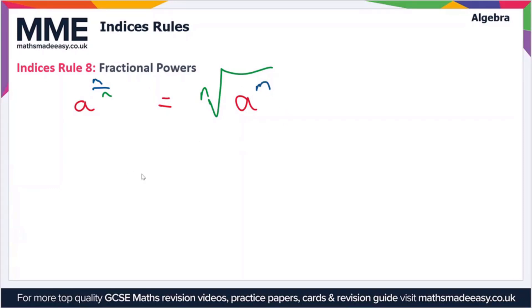So this might look confusing at first. Usually we use this to describe square roots and cube roots. For instance, a to the half is equal to the square root of a to the power one, which is obviously just equal to the square root of a.